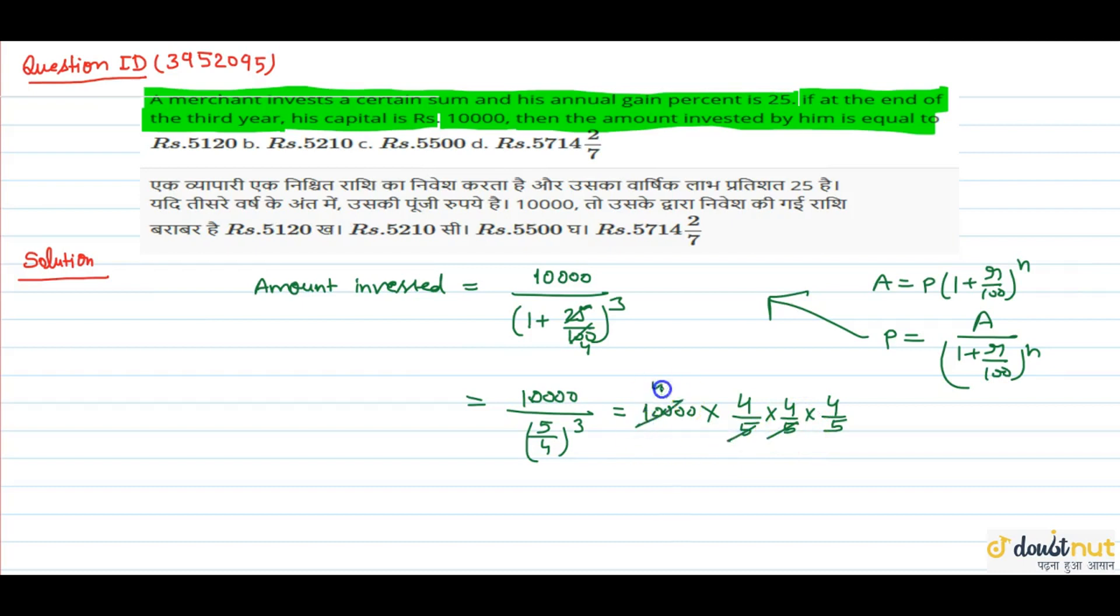Now we divide this. 25 over 400. Cancel from 5, divide from 5. So how much is it? 5,120. That means he invested this amount. Option number A.